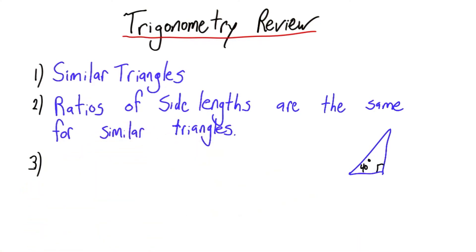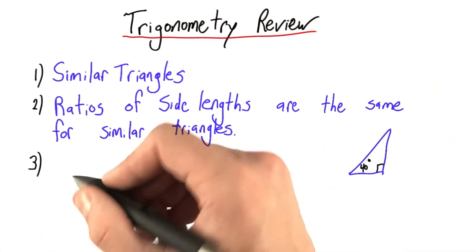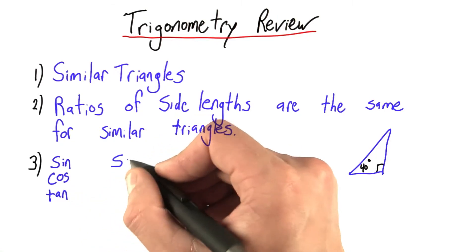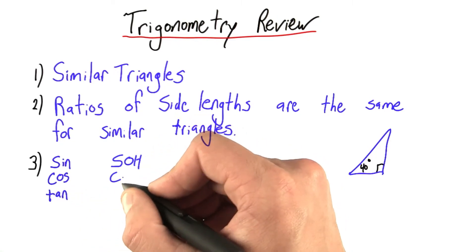In fact, those ratios are so powerful that we gave names to them: sine, cosine, and tangent. And we can remember what those names mean by SOHCAHTOA.